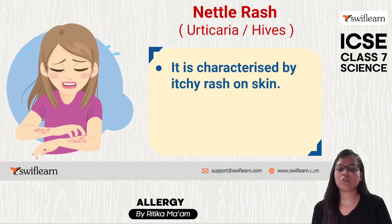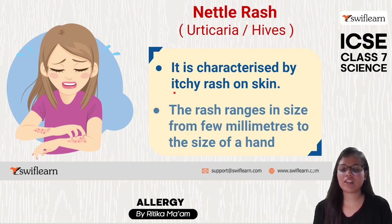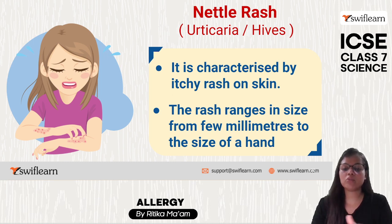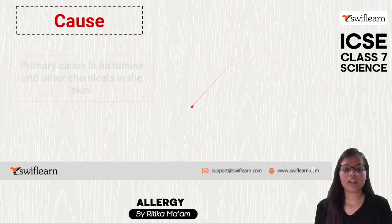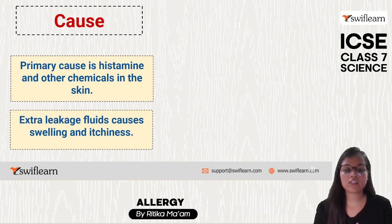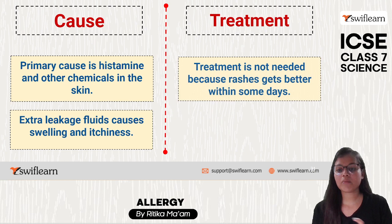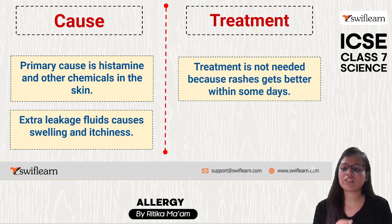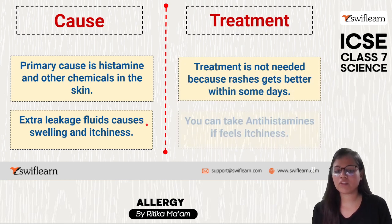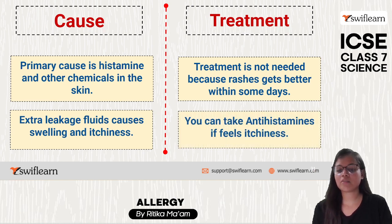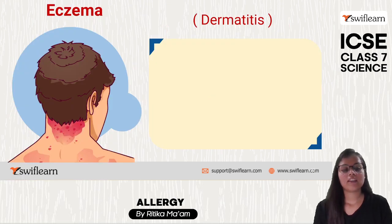Next is nettle rash, also known as urticaria or hives. We have itchy rashes on our skin ranging from a few millimeters to the size of a full hand. The cause is histamine and other chemicals on the skin, and sometimes extra leakage of fluid causes swelling and itchiness. No particular treatment is needed as it gets better in a few days; antihistamines can be taken to treat itchiness.